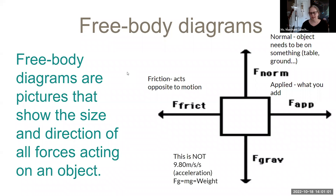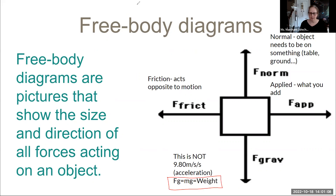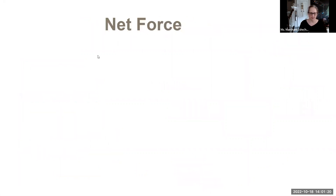The force of gravity is not 9.8. You do need to have that little equation for later on — it's noted here so that you have it. The force of gravity is equal to the mass times gravity, and that's how we calculate weight. That's all weight means: mass times gravity. So if you're on a different planet, your weight is different, but your mass is the same.